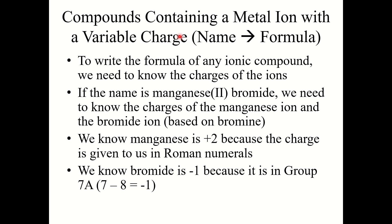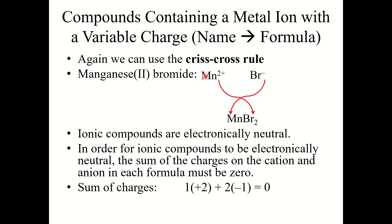Now let's look at variable charge metals going from name to formula. This is somewhat easier because the charge is given to us in the Roman numerals. For example, if the name is manganese(II) bromide, we know manganese is +2 from the Roman numeral. Bromide comes from bromine, which is in Group 7A, so it is −1. Using the criss-cross rule with Mn²⁺ and Br⁻, the formula is MnBr2.